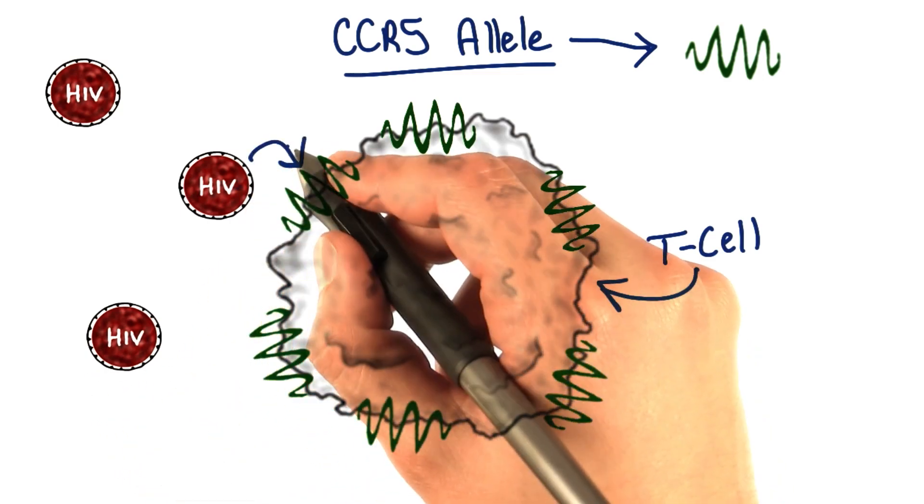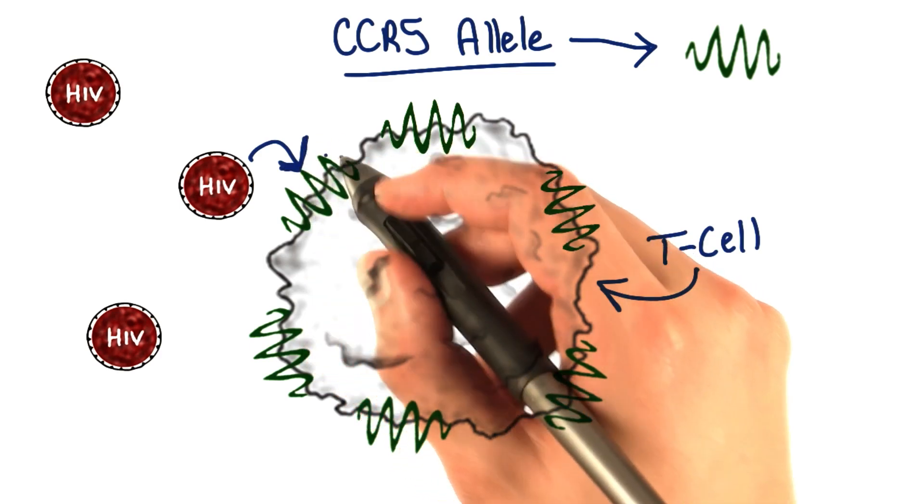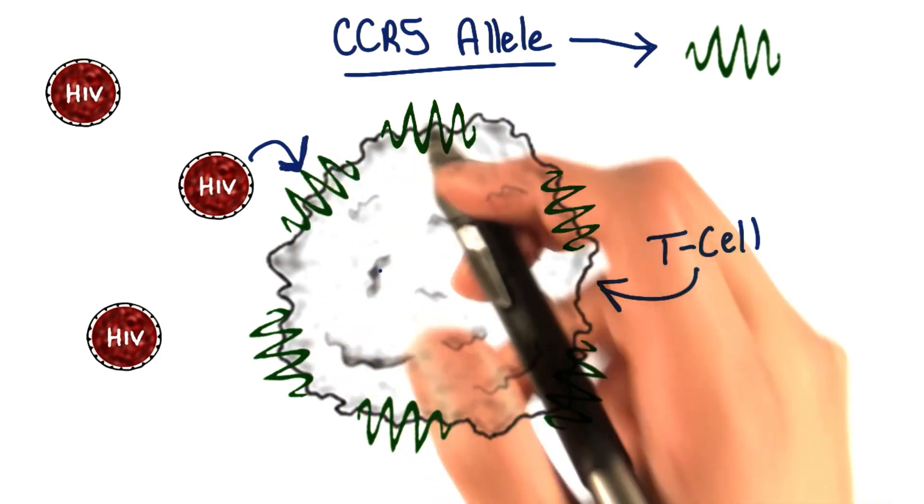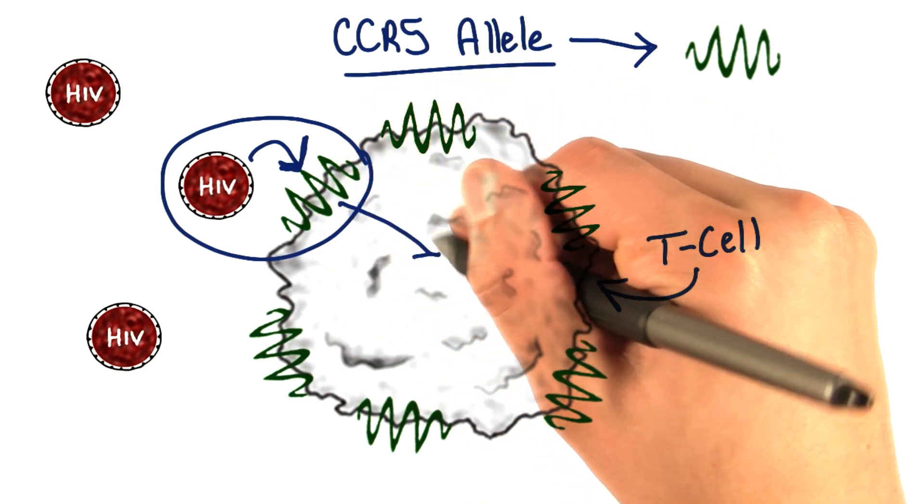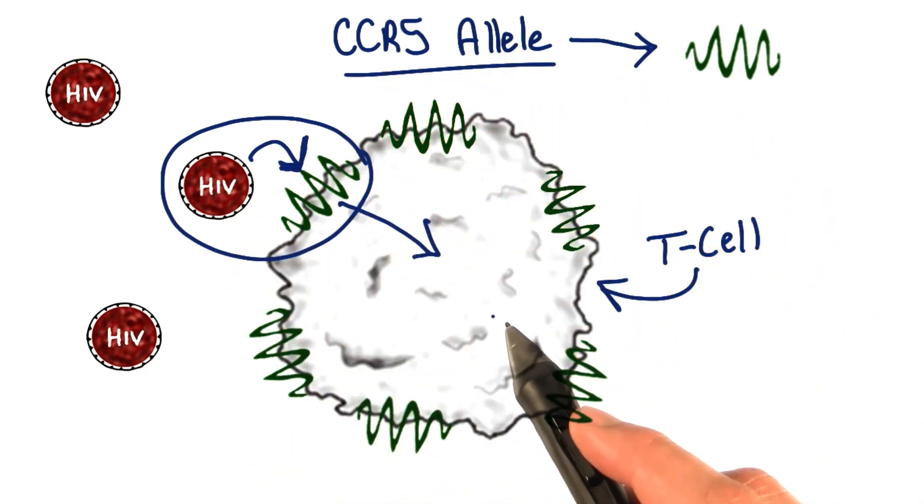The HIV virus binds really well to this protein called CCR5, and when it does, the whole complex gets internalized. This is how HIV gets inside T cells.